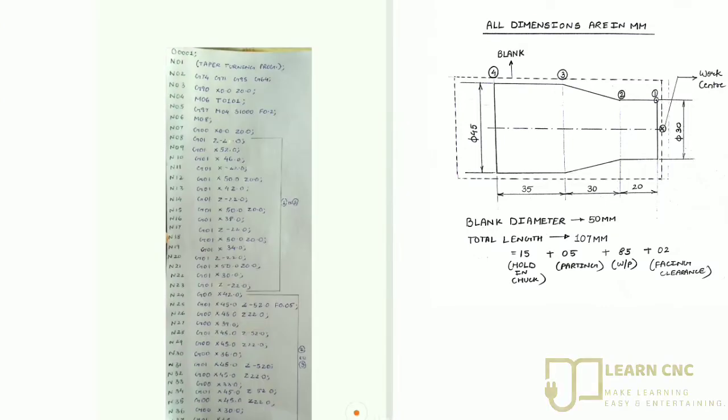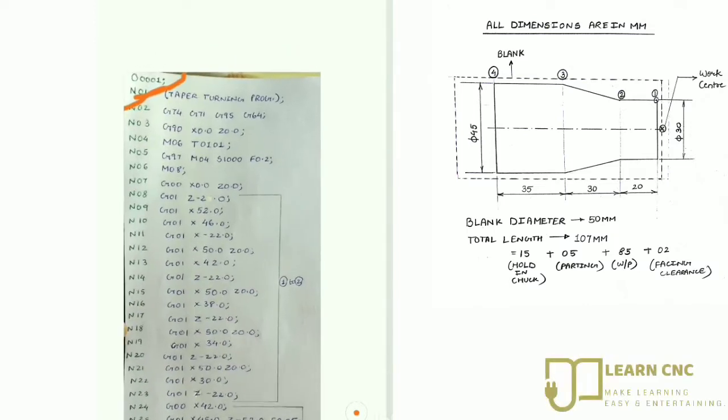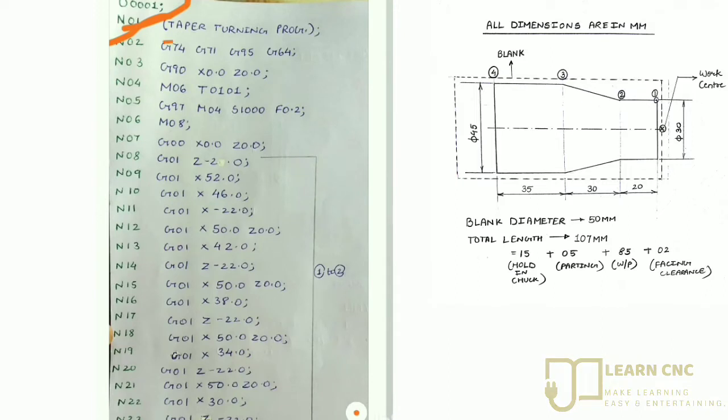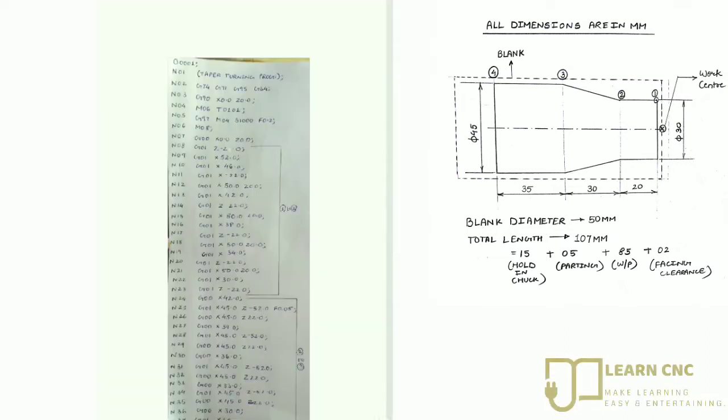Starting with the program, the program number is O0001 and the program name is taper turning program. G74 means reference point approach. We use X0 and Z0 with G74.